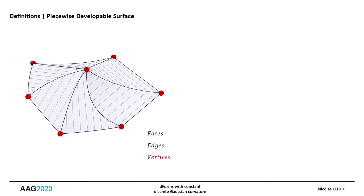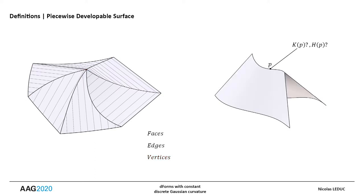A vertex is defined as the intersection of at least three edges. We will now try to answer the question: how to evaluate the Gaussian curvature at the seams of a piecewise developable surface.